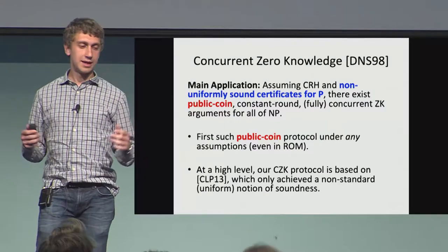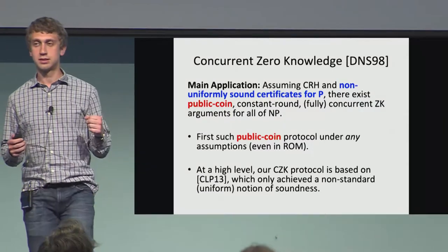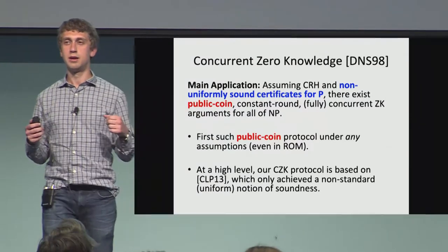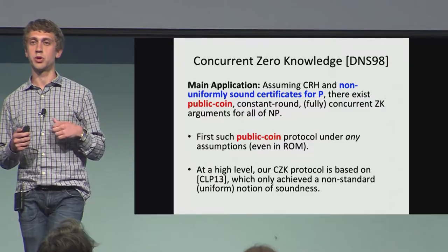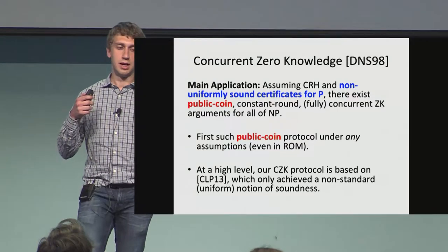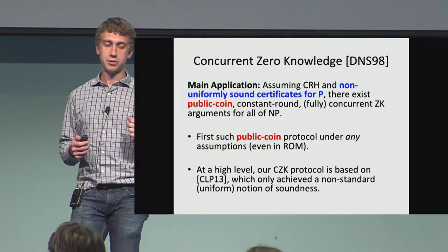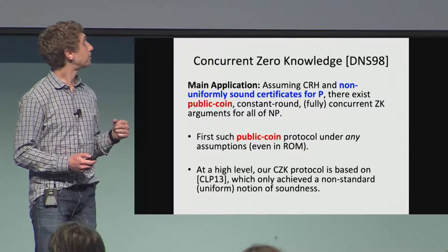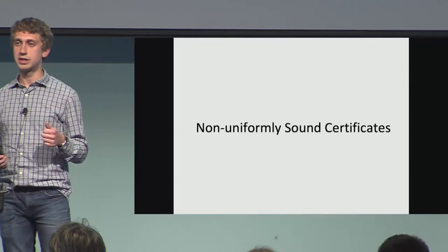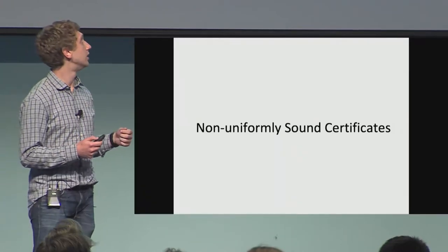At a high level, our protocol follows from the 2013 work by Chung, Lin, and Pass, where they achieved a uniform notion of soundness using certificates that were only capable of achieving uniform soundness. We show that with this stronger notion of non-uniformly sound certificates, we can improve this to get the full notion of soundness for a concurrent zero-knowledge protocol. For the rest of the talk, I want to focus on our construction of non-uniformly sound certificates and give a high-level idea of how it works.